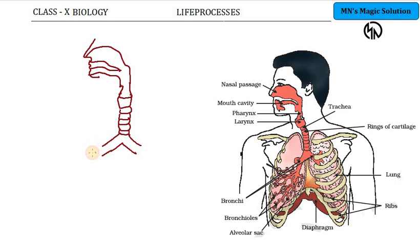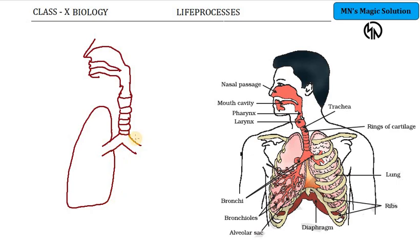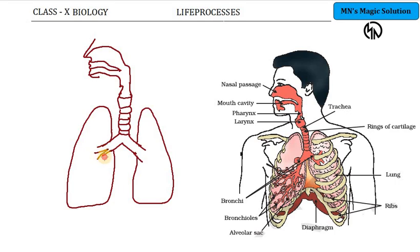So the bronchi divides into 2, and then further it divides again. Let us draw the lungs as such. Two lungs, typically equal in size, you can draw. After that you have to branch it out — you can branch it inside the lungs like a V-shape, putting the branching structures on either side.